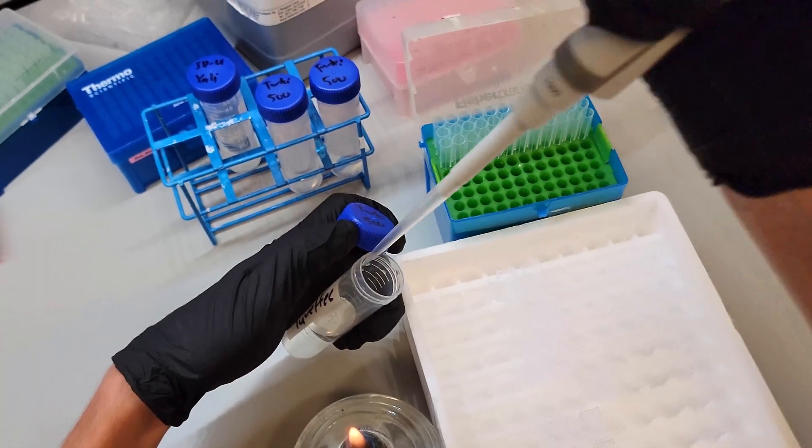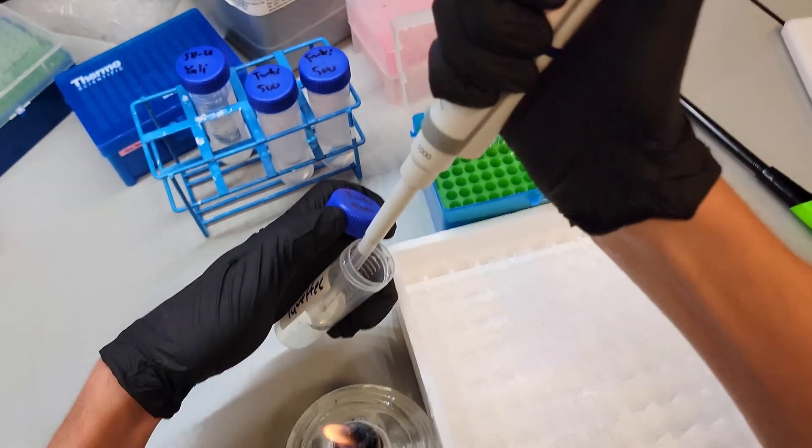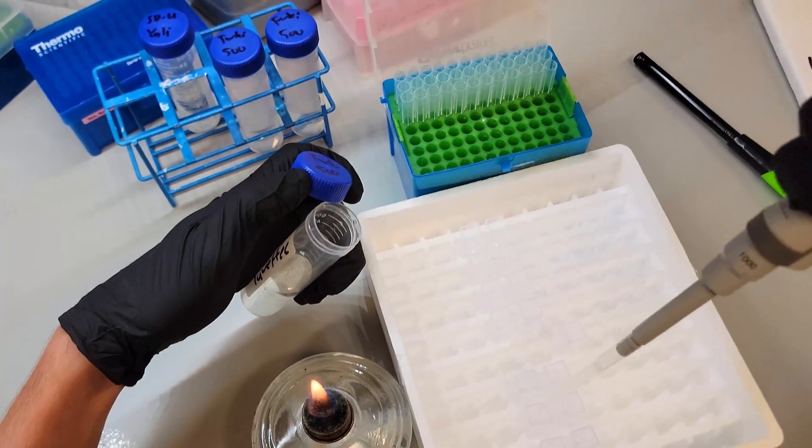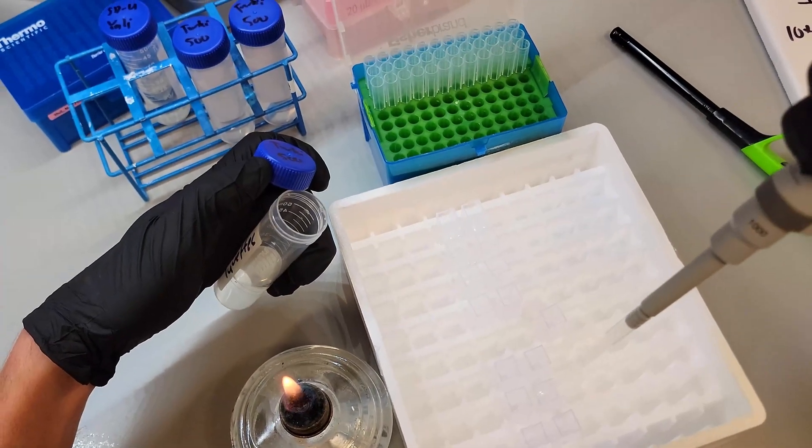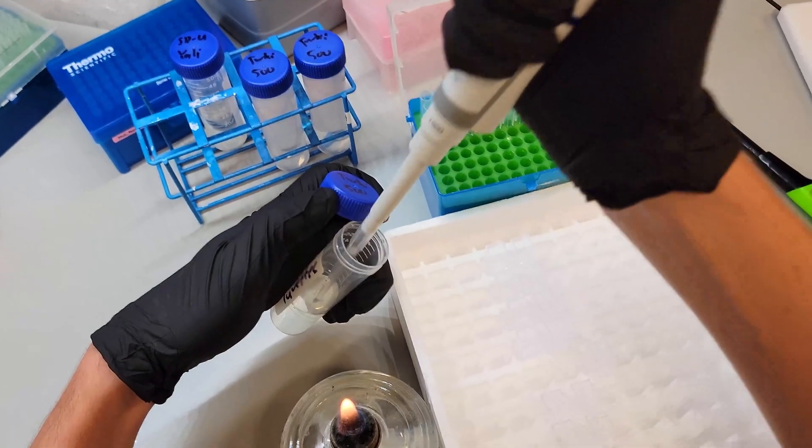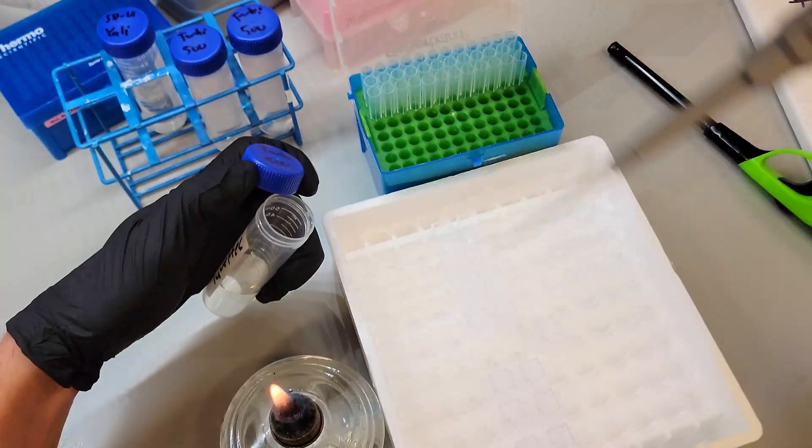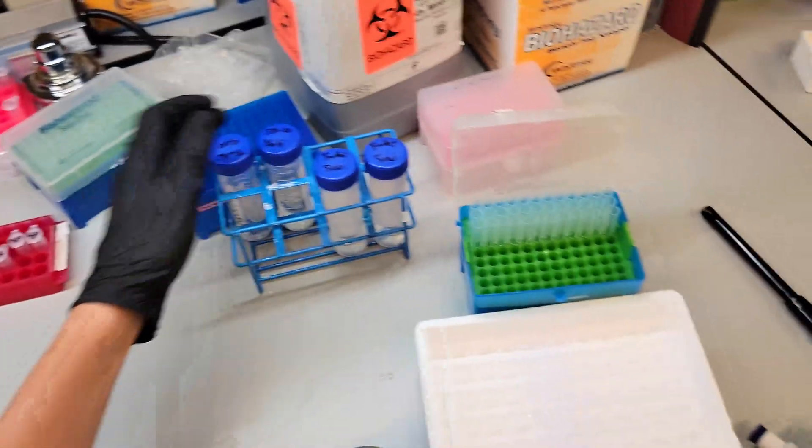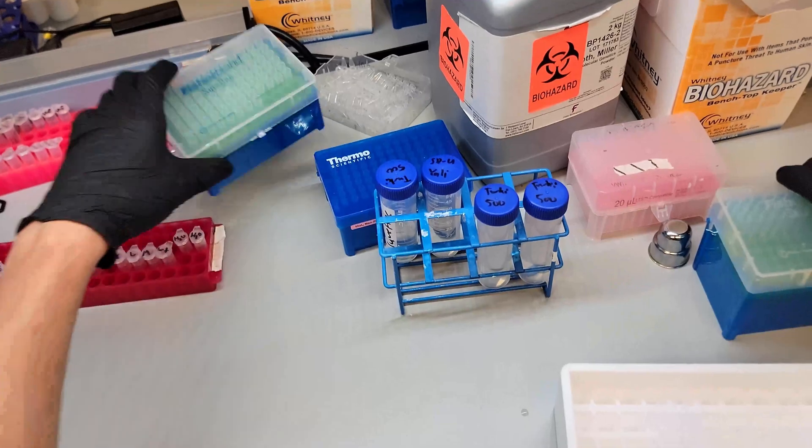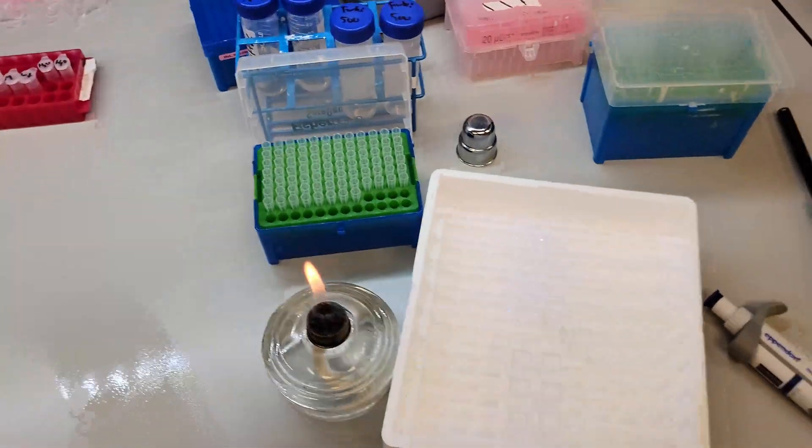We're going to be using a spectrophotometer to measure the optical density at 600 nanometers, or the OD600. The spectrophotometer shines light through one of these little cuvettes and measures how much light gets through. If less light gets through, then it's more dense. If more light gets through, then it's less optically dense.